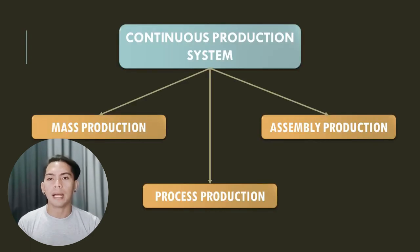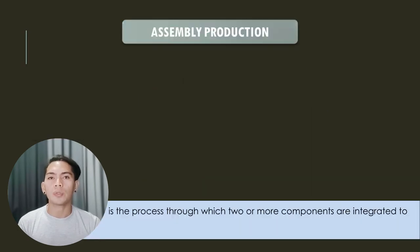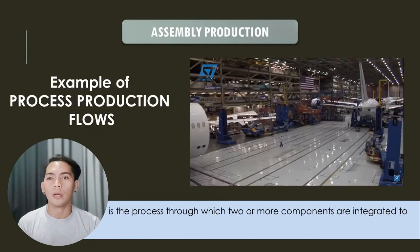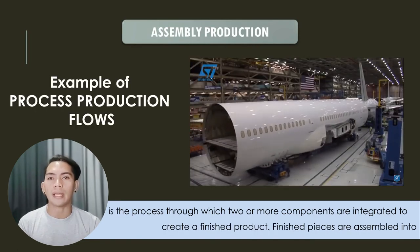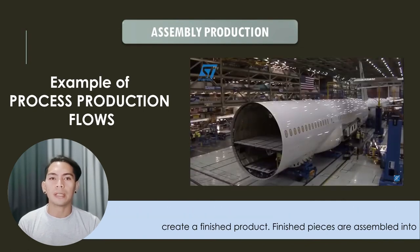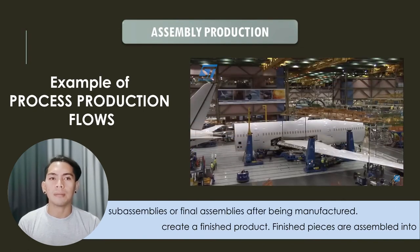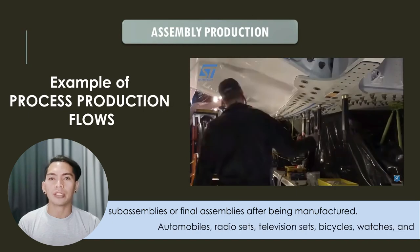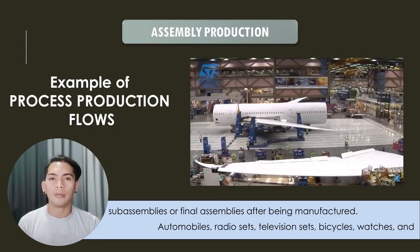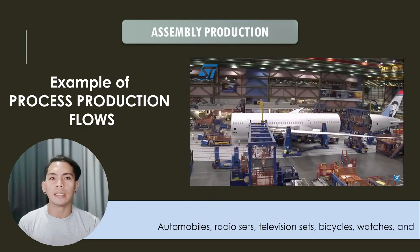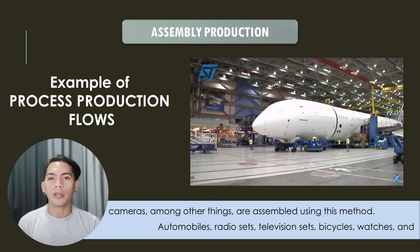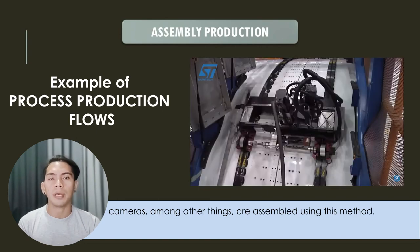The third type of continuous production system is assembly production. Assembly production is the process through which two or more components are integrated to create a finished product. The finished pieces are assembled into sub-assemblies or final assemblies after being processed in a factory. Automobiles, radio sets, television sets, bicycles, watches, and cameras, among other things, are assembled using this method.